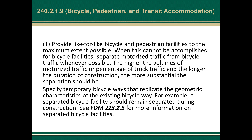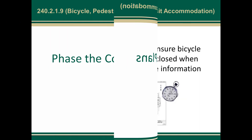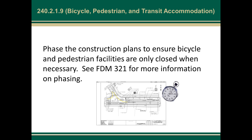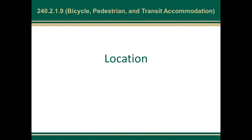We specifically want this information included because as we move toward more separated bicycle facilities, it's going to be really important to keep the design user in mind. If in the past it's been a separate facility, we don't want to suddenly put them in a shared lane condition if possible. We also talk about phasing: phase the construction plans to ensure bicycle and pedestrian facilities are only closed when necessary. See FDM 321 for more information.